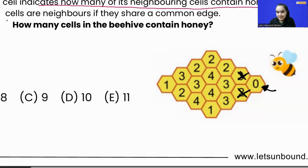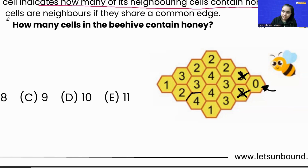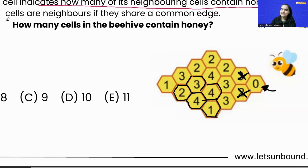Now let's look at number four over here. It is surrounded by one, two, three, four cells. Let's assume that number four is also having honey. This tells us that two, three, four, and one — all four neighboring cells will have honey, because number four tells us the four cells surrounding it will contain honey.